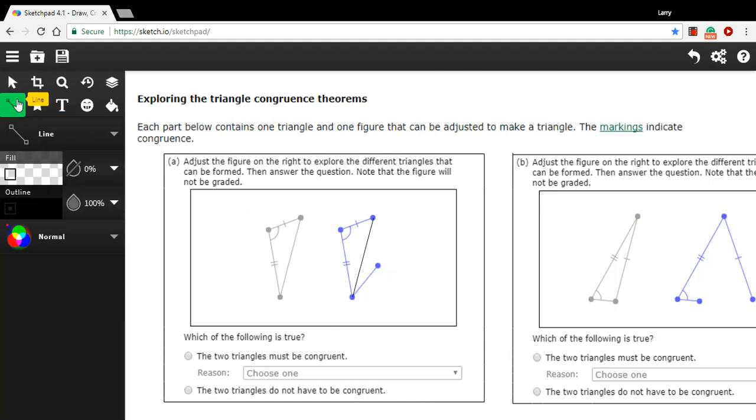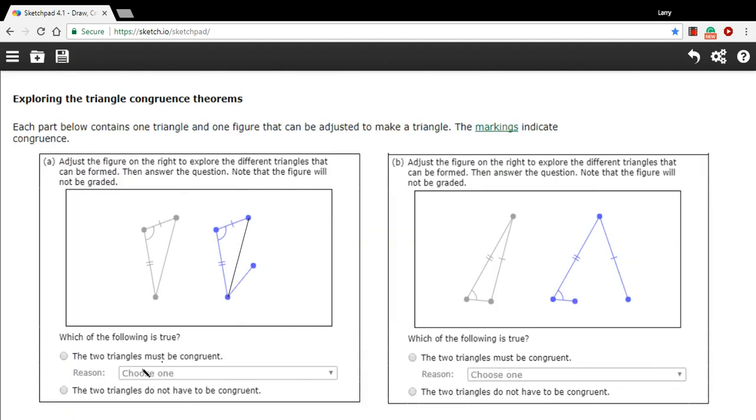And that is a property of congruence called the side angle side congruence property. So these triangles must be congruent if they've got these things congruent. And it's the side angle side property.